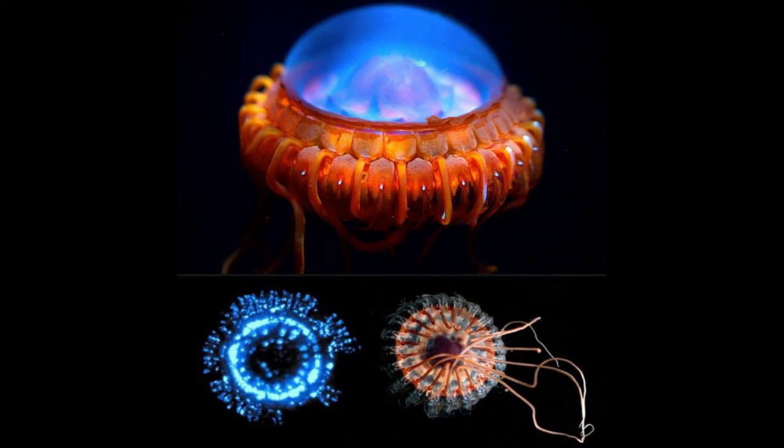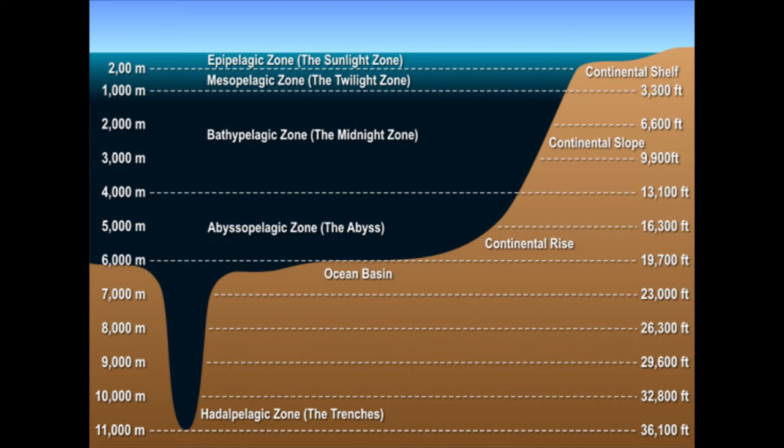They've also been found in the North Atlantic, Pacific, the Gulf of Mexico, and waters around New Zealand. Also known as the alarm jelly or coronate medusa, the Atolla jellyfish live in the bathypelagic zone of the ocean.